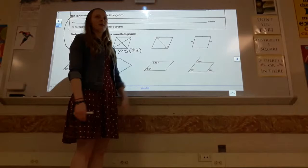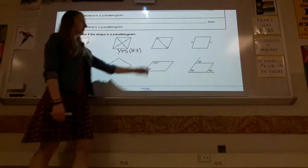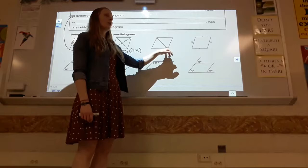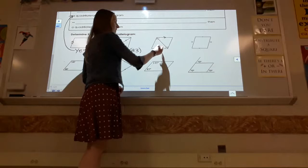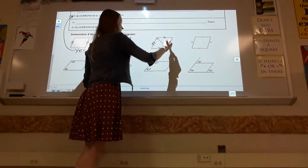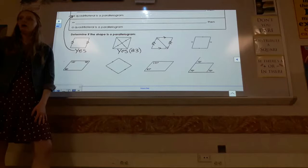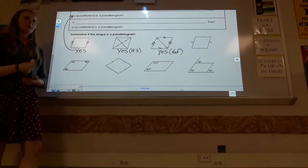The third shape has angle markings. Those single-mark angles are alternate interior angles. Using the converse of the alternate interior angles theorem, if alternate interior angles are congruent, then those lines are parallel. We can do this for both sets of sides, giving us both sets parallel. So by definition, it's a parallelogram.